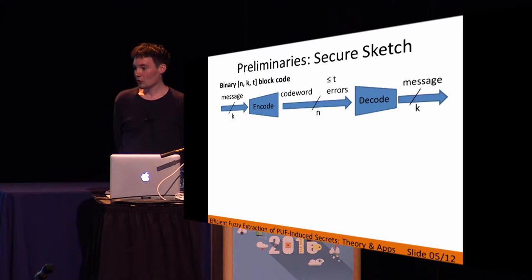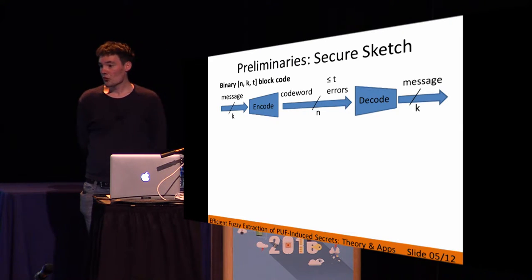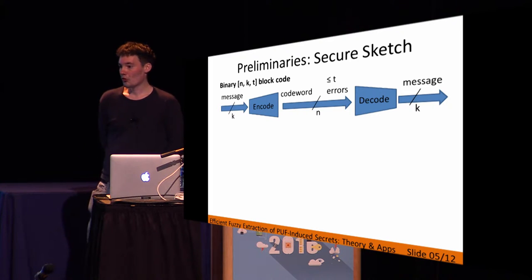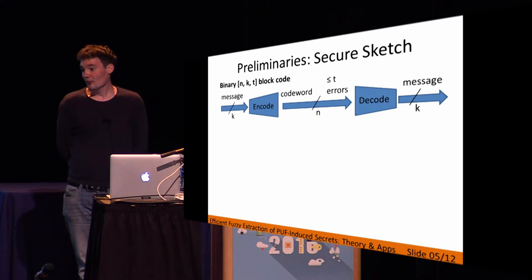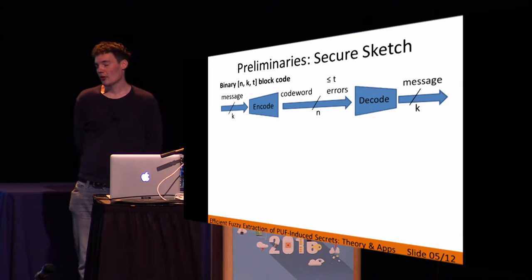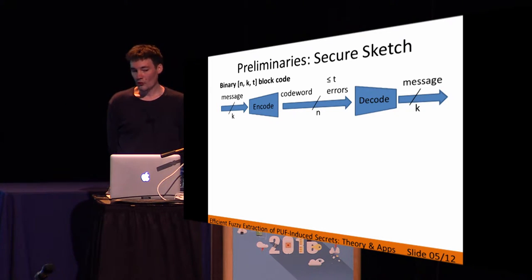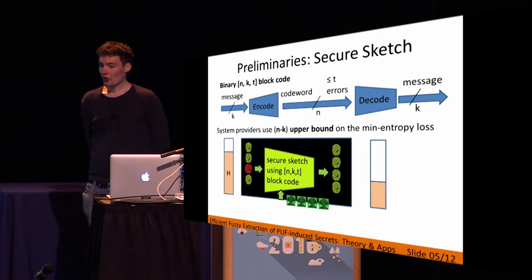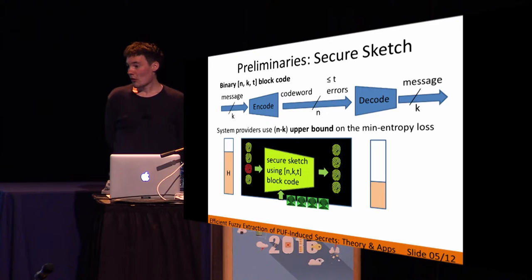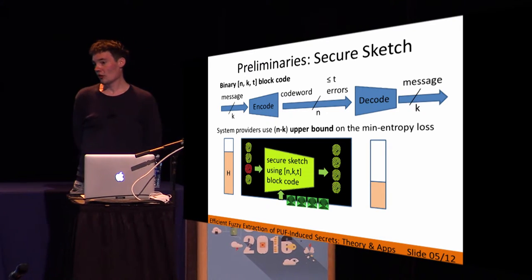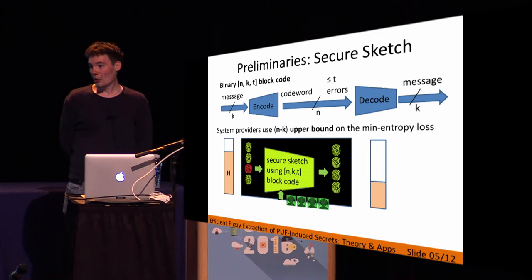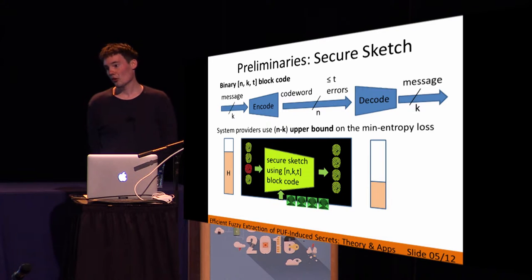The secure sketch, which is the main focus of the theory, relies on an error-correcting code — most frequently an (N, K, T) block code. A K-bit message is encoded into an N-bit codeword with redundancy built in, allowing decoding of a corrupted codeword back to the original message as long as the number of errors does not exceed T. These secure sketch constructions also publish helper data available to the attacker, causing a loss in min-entropy because the attacker gains some information.